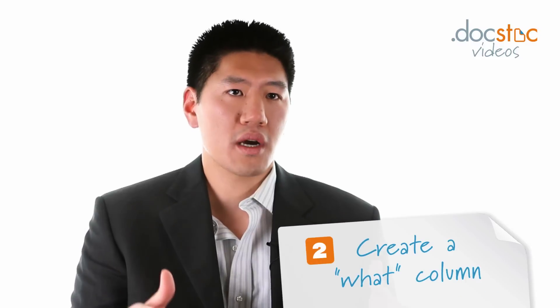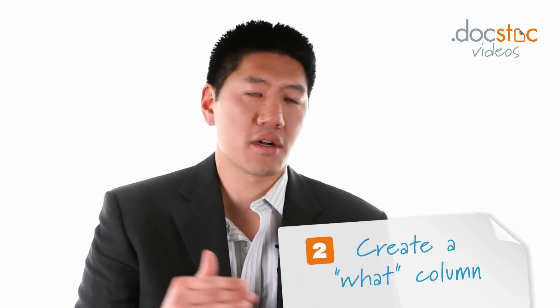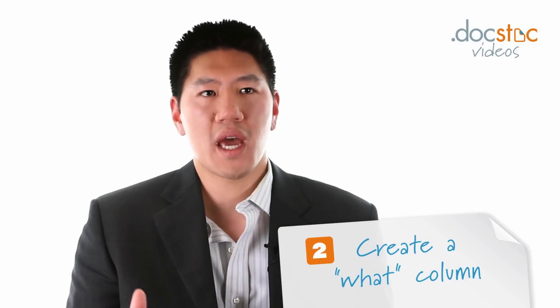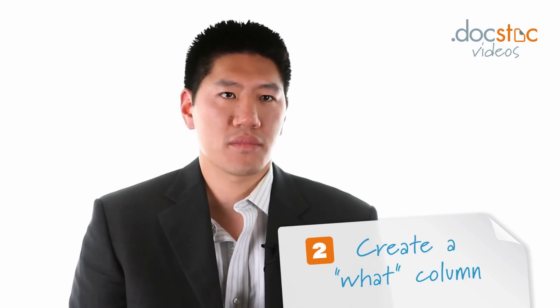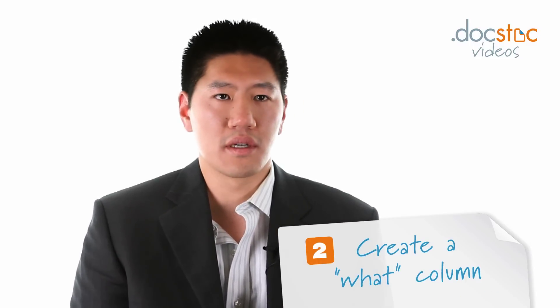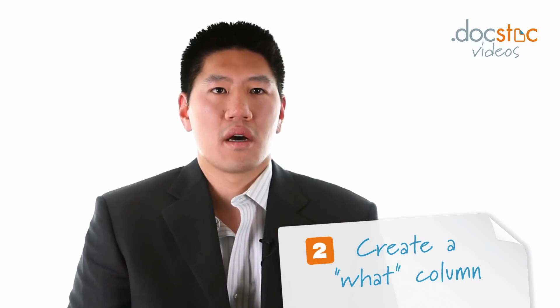Number two is creating a column in whatever platform you're using — let's say you're using a dry erase board — creating a column called "What." Under the What column you're going to list out every action item that needs to be executed.